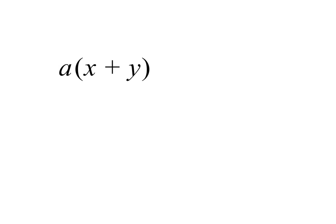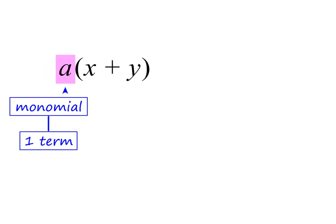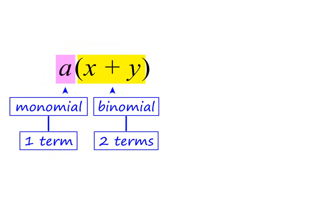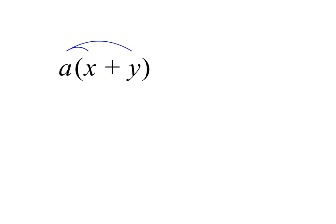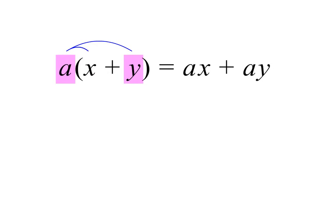By now you should have no problem multiplying out this expression. We have a monomial, or one term, being multiplied by a binomial, or two terms. To multiply this, we need to multiply each term inside the bracket by a. a times x equals ax, and a times y equals ay.